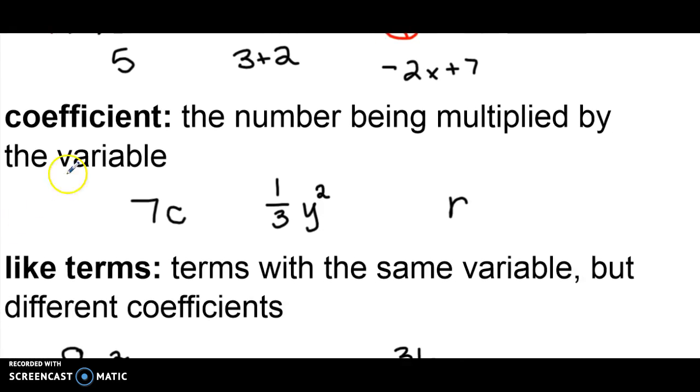Now a coefficient is the number that's being multiplied by the variable. So if we look at this first one here, we have 7C. The number that's being multiplied by the variable C is seven. So my coefficient is seven.